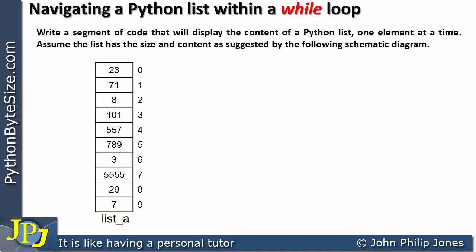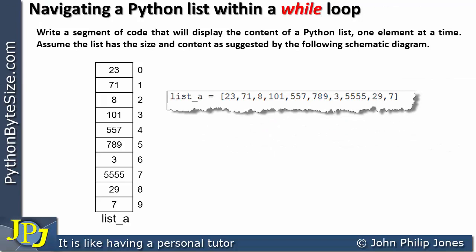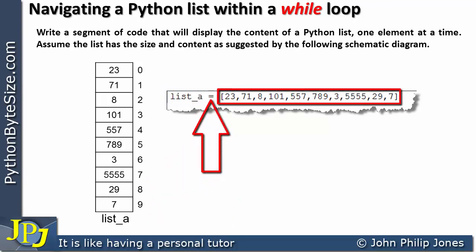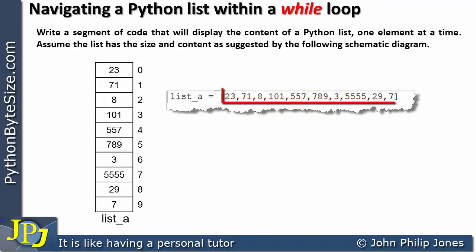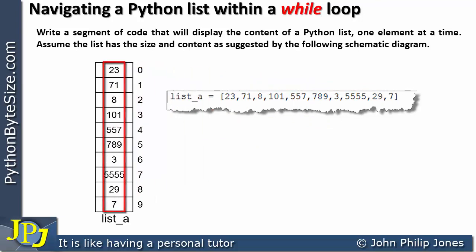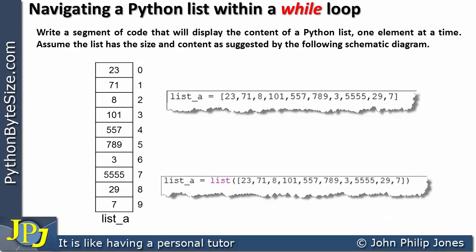To create the list shown in the schematic diagram, we can use this line of code. You can see that I choose the name list_A, which reflects the name shown. I assign this with square brackets, and you can see I have typed in all of the contents of the list. For example, 23 is here in the list, and 7 is the last element.